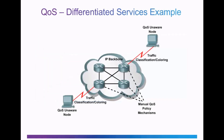In this diagram of a differentiated services example, you can see that the QoS nodes are unaware that QoS is being implemented across the network. That's because a manual QoS policy has been configured on the routers in the network. Notice that as traffic goes across the network, the traffic is classified and colored.